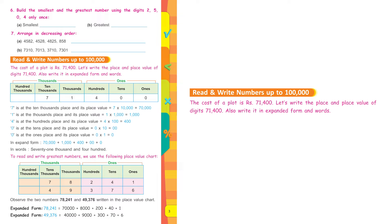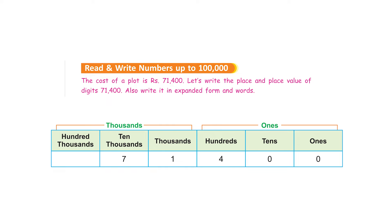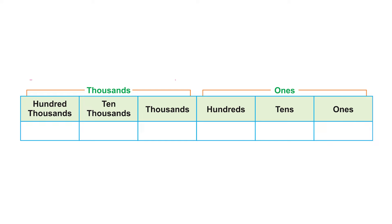The cost of a plot is rupees 71,400. Let's write the place and place value of digits in 71,400, and also write it in expanded form and words. Looking at the chart, starting from the right side: ones, tens, hundreds, thousands, ten-thousands. We write 7 under ten-thousands, 1 in the thousands column, 4 under hundreds, 0 under tens, and 0 under ones.